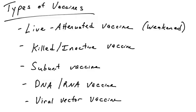This is going to be the first in a series of videos on the different types of vaccines. These are the five types we're going to cover: live attenuated vaccines, also known as weakened vaccines, which will be the focus of this video. Later videos will cover killed or inactivated vaccines, subunit vaccines, nucleic acid vaccines that contain DNA or RNA, and finally vector vaccines.